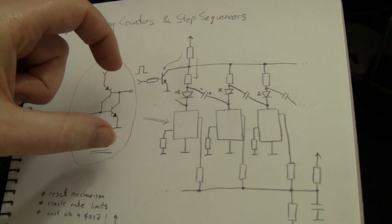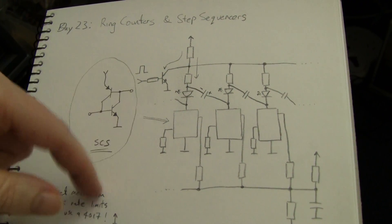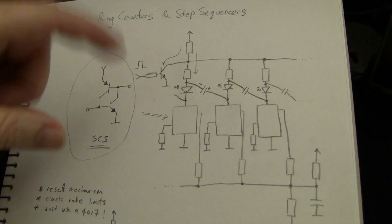Turning on the PNP hard and that then provides base current for the NPN and turns it on even harder. So positive feedback, the thing saturates, essentially acts like an SCR, it slams on until the current running through it is removed. Once the current running through it is removed, then the thing turns off and releases again.